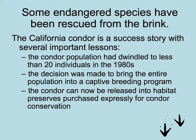One iconic species rescued from the brink of extinction is the California condor, a success story with important lessons for future conservation. In the 1980s, the condor existed in very small numbers — only 20 individuals — so the dramatic decision was made to bring them all into a captive breeding program. Their numbers had dwindled partly because they couldn't reproduce; eggshells were so soft they would collapse due to accumulation of DDT and other toxins. After living in captivity, populations were amplified and condors were released into habitat preserves purchased expressly for their conservation.